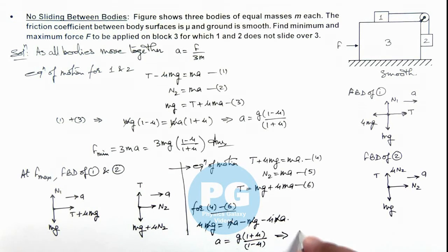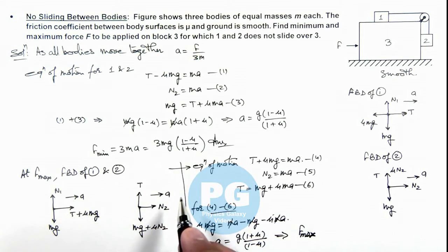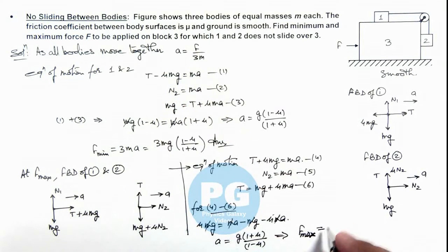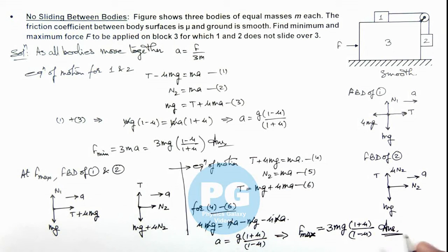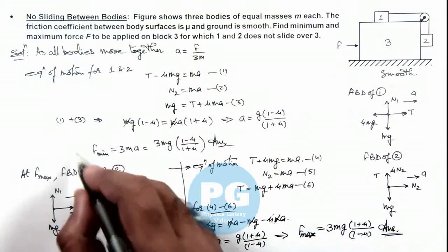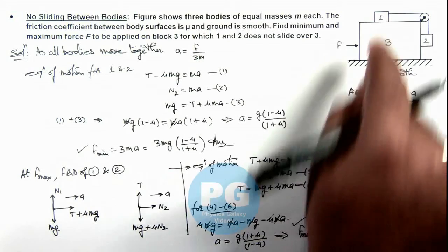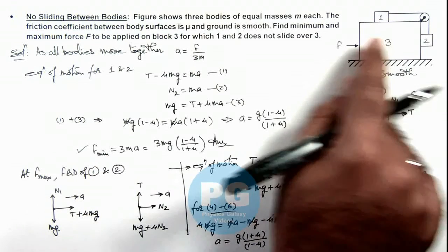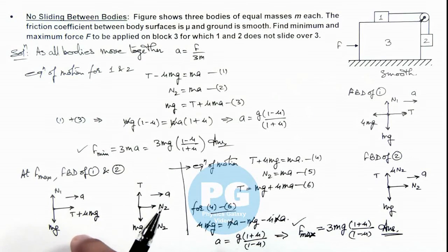This acceleration gives the maximum force value. Using the relation F equals 3m times ay, the maximum force equals 3m times g times (1 plus mu) divided by (1 minus mu). This is the maximum force that can be applied on block 3 so that blocks 1 and 2 remain at rest with respect to block 3. If the applied force is between F min and F max, blocks 1 and 2 will be at rest with respect to block 3. The magnitude and direction of friction on blocks 1 and 2 will vary, but they will remain at rest relative to block 3 during motion.